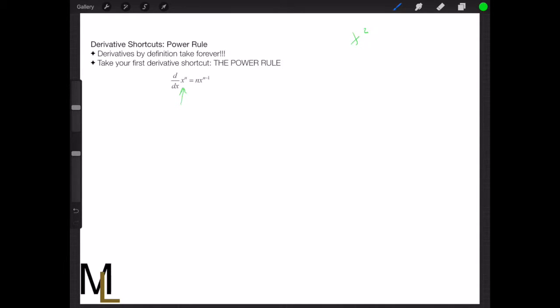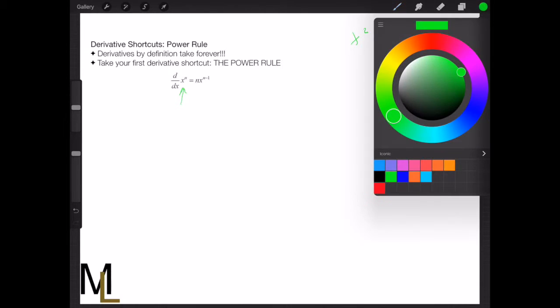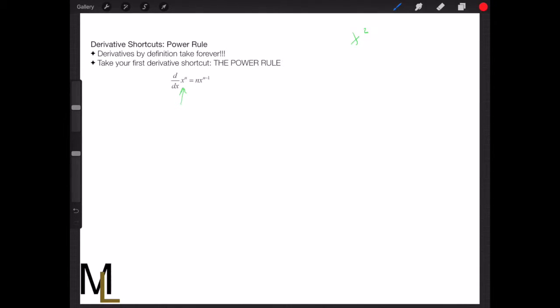For example, x squared. When you take the derivative, so don't be confused by this d over dx. d over dx is basically equivalent to prime.